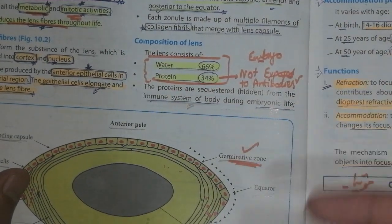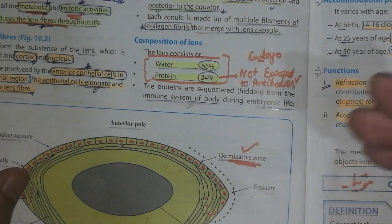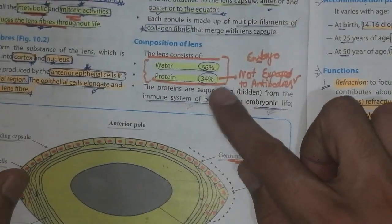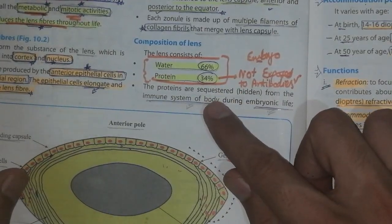What is the composition of lens? In the composition, 66 percent is water and 34 percent is almost protein present in the lens.